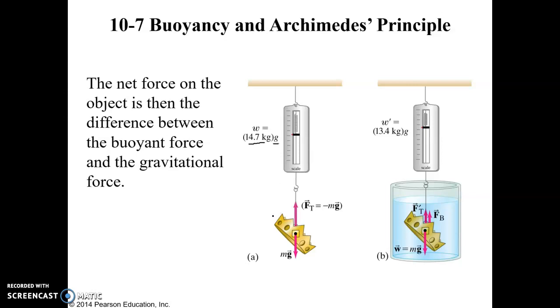Now if we submerge the crown in a fluid like water and then we weigh it, well then it only weighs 13.4 kilograms times g. So what accounts for the difference between the 14.7 and the 13.4? That difference comes from the buoyancy force. At the top there's a pressure acting down on the crown, but at the bottom there's an even bigger pressure acting up on it. And that difference in pressure results in the buoyancy force.